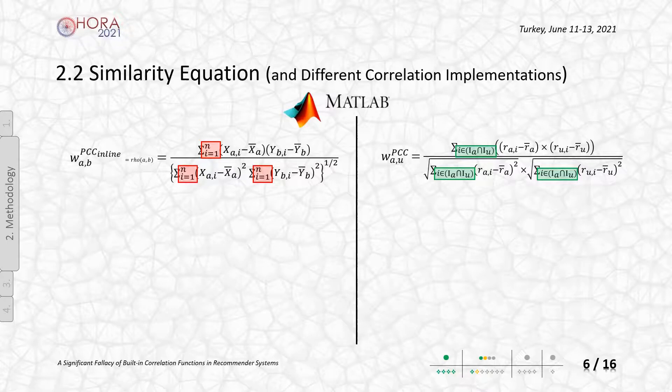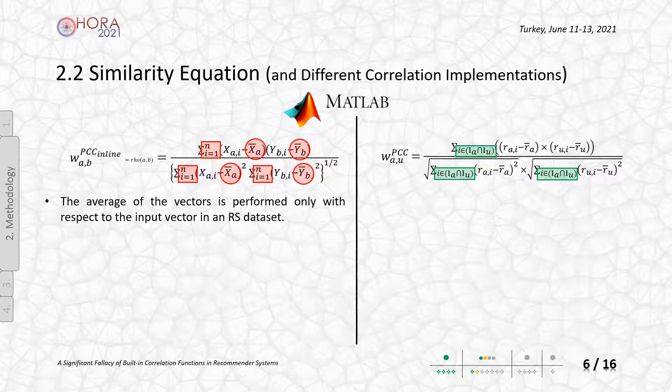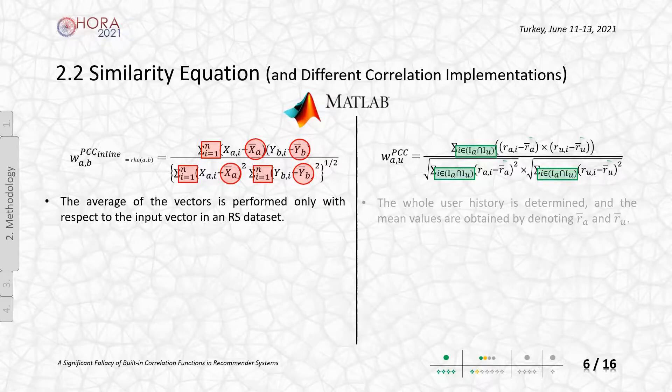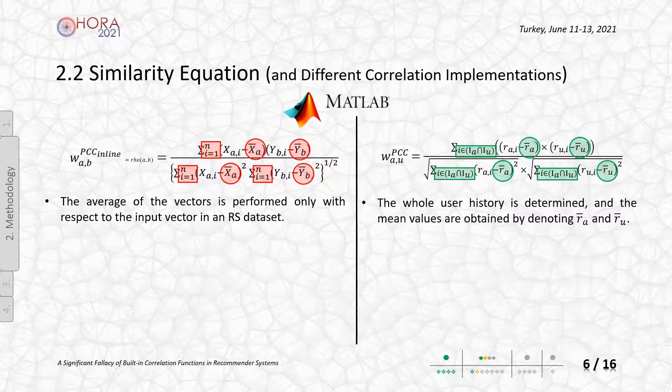In the left equation, the common arguments can be considered only. However, a fallacy occurs when applied to the RS because it does not consider all history. Instead, in the right equation, the parameters hold the behavior overall. All in all, this study shows how much the utilization of the built-in function changed the outcomes.